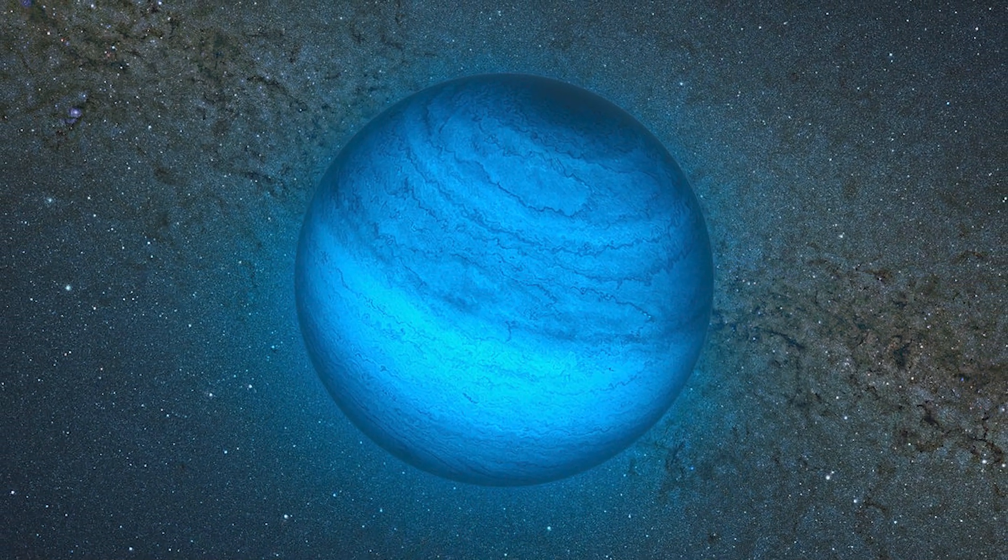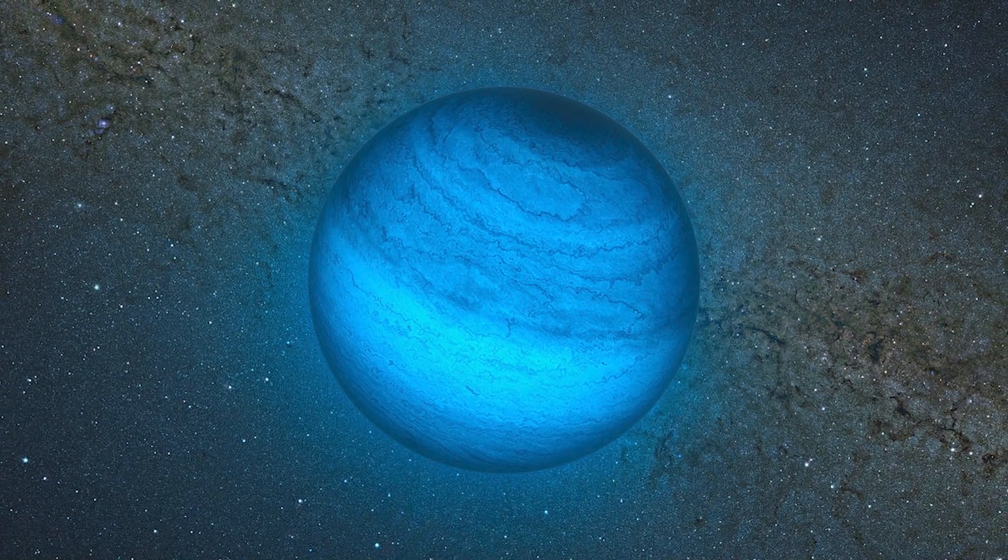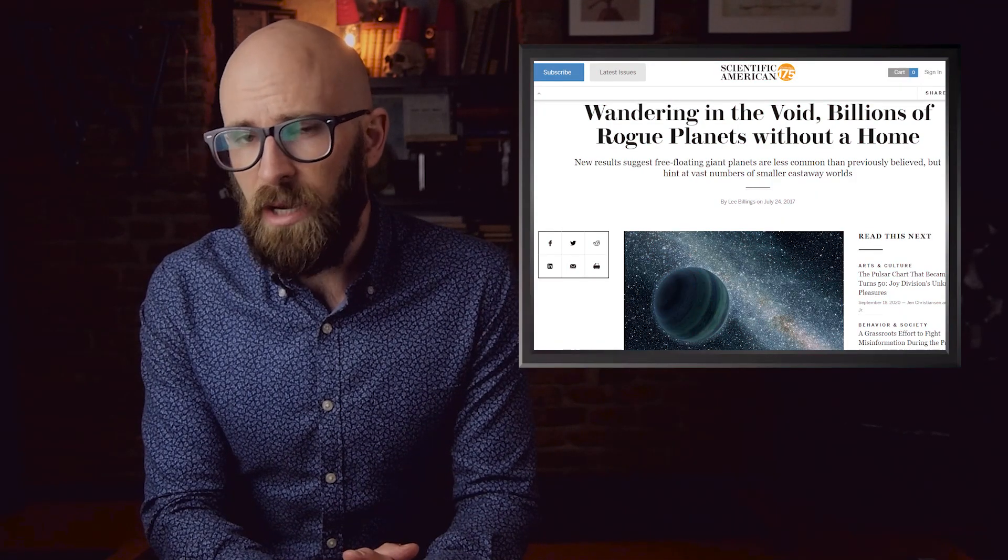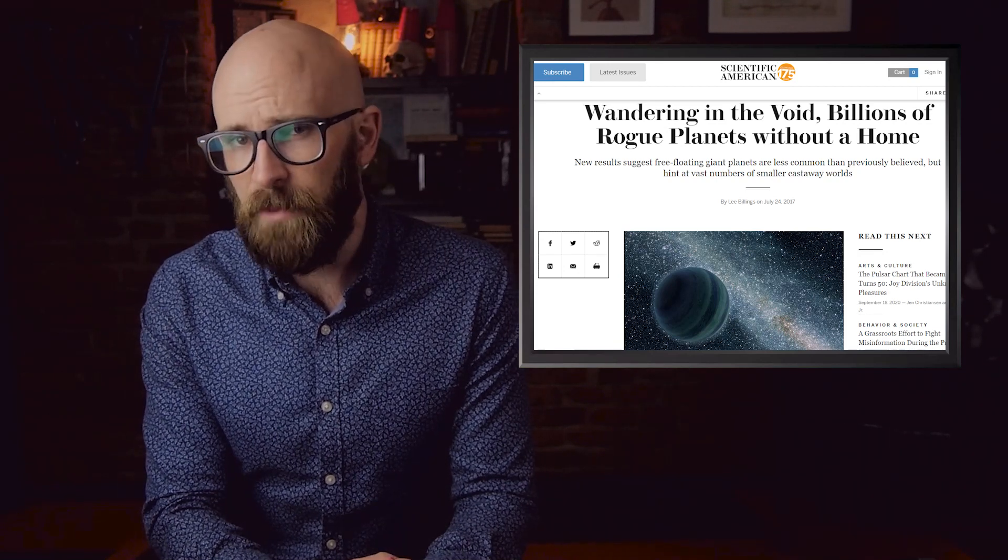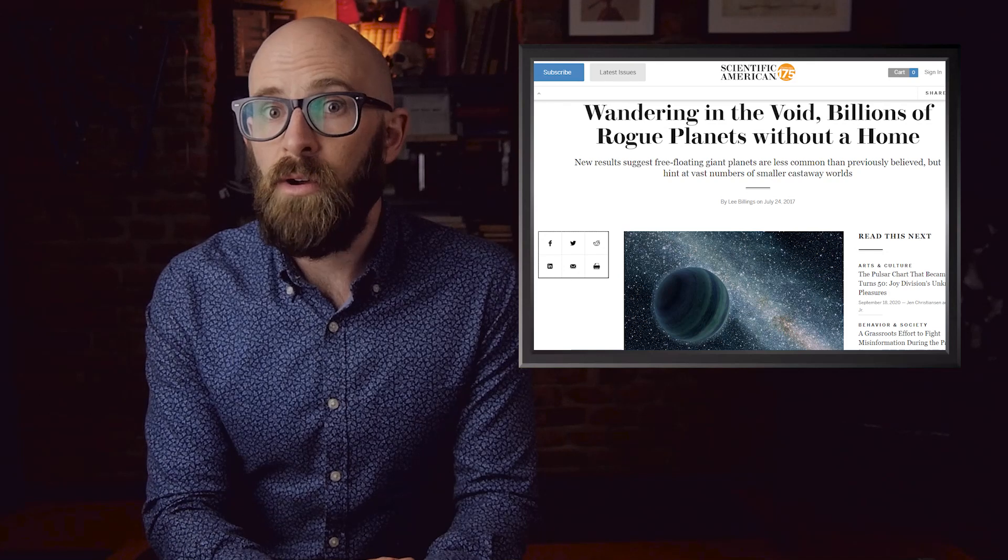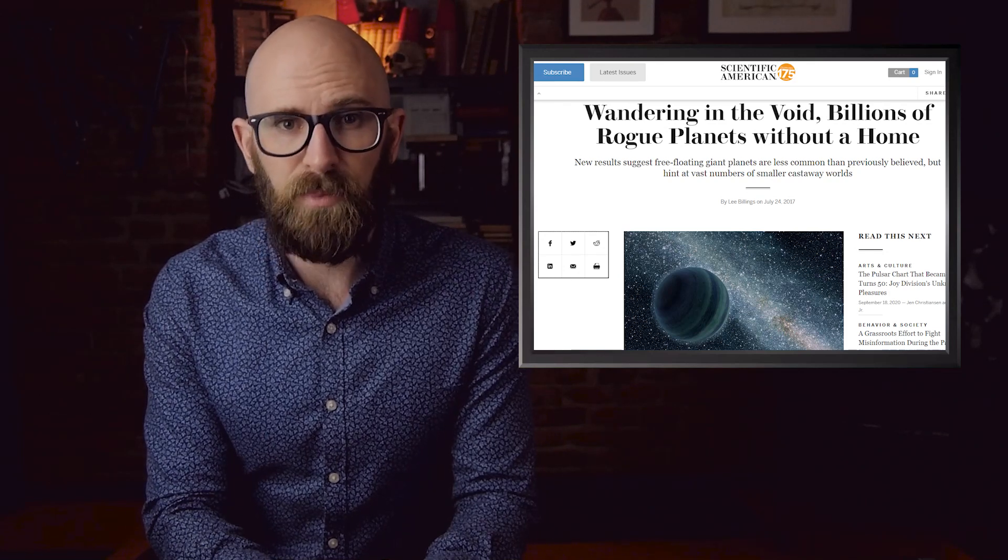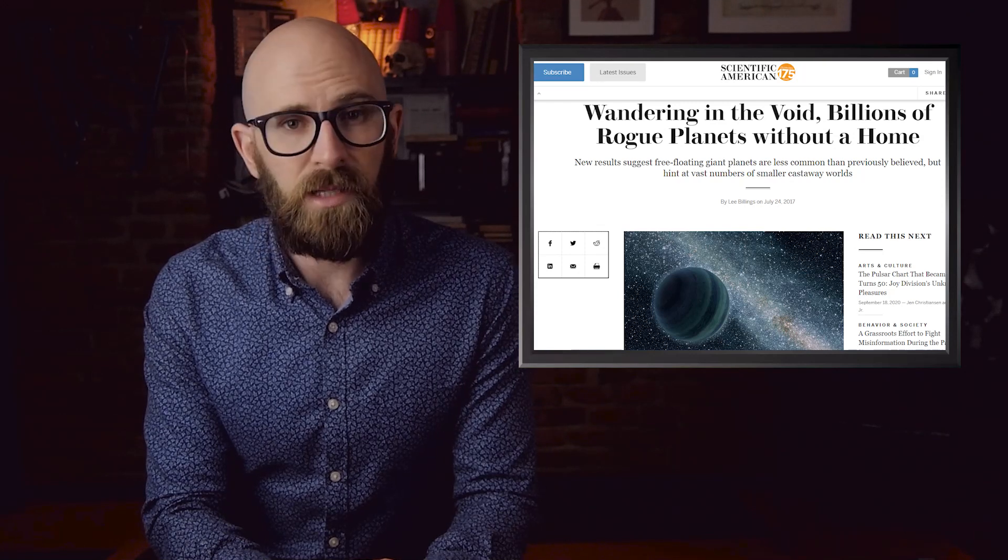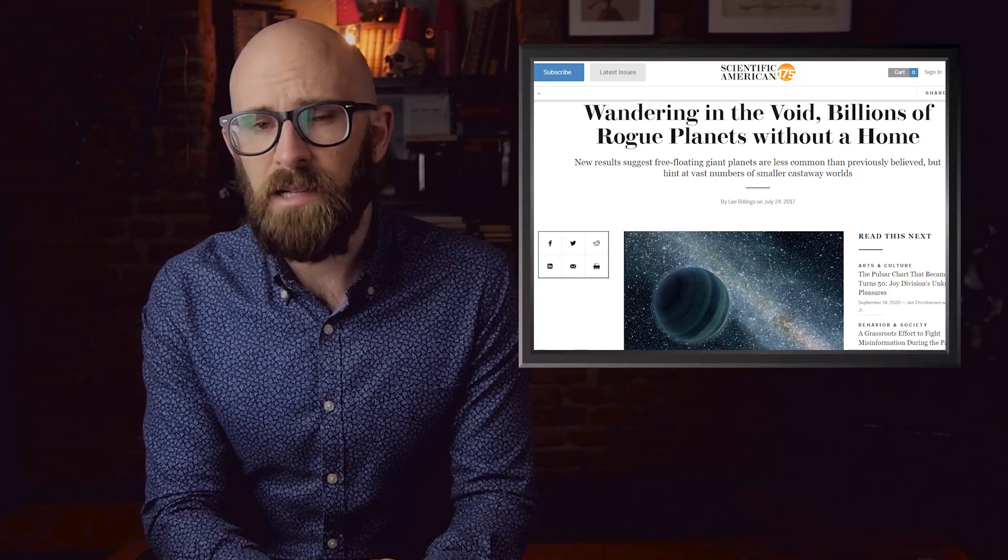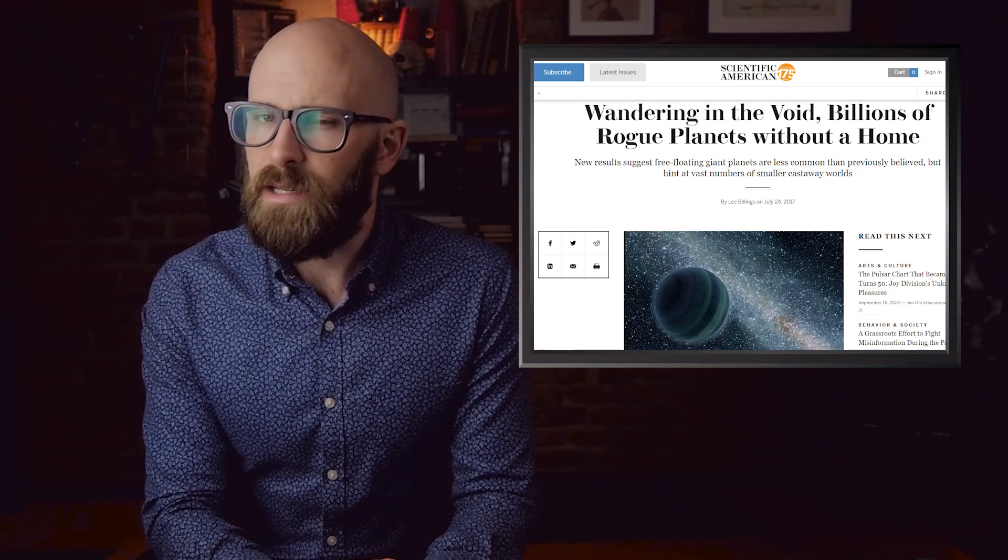Rogue planets are thought to dwarf the number of those orbiting stars in the Milky Way, and even possibly the universe, and many of those planets have partners such as moons, brown dwarf companions, and gas giants like Jupiter. So if we can call these rogue planetary systems, and the majority of planets in our galaxy don't have a parent star, then doesn't the fact that we have a star of our own make our solar system a little bit more unique.